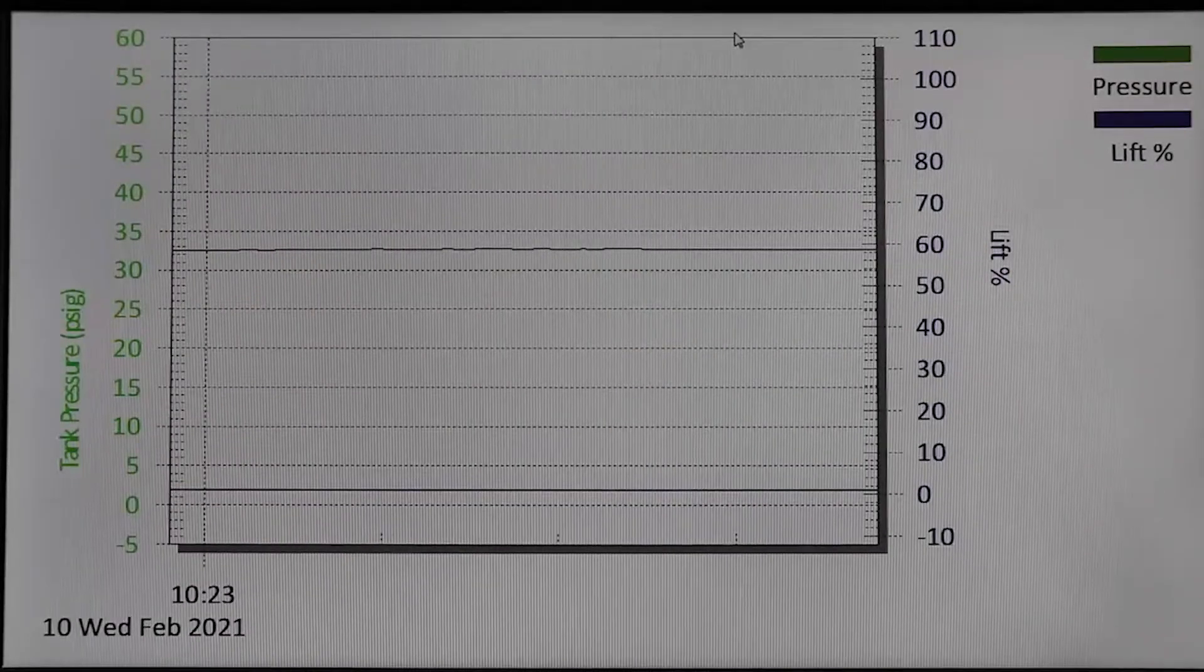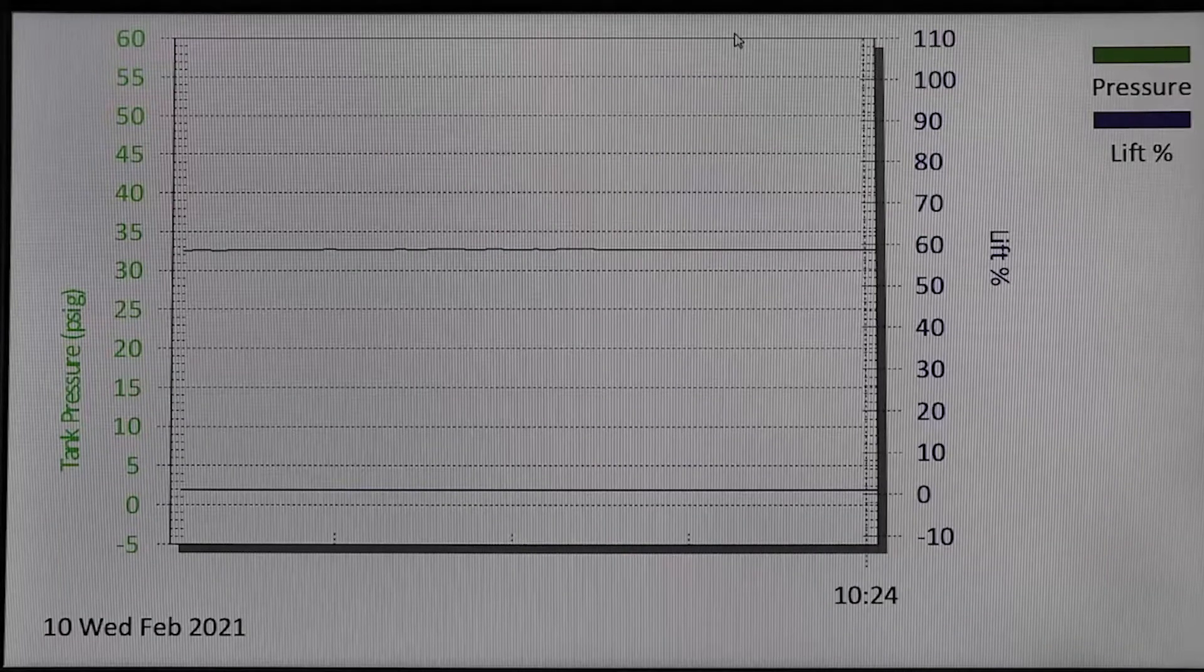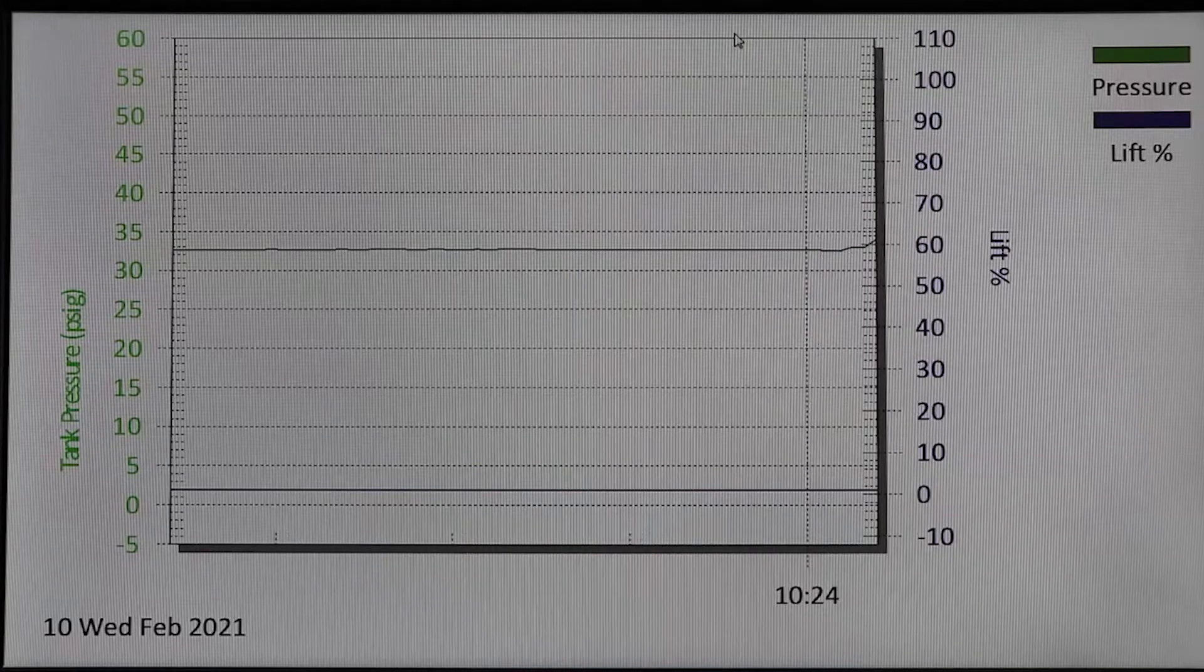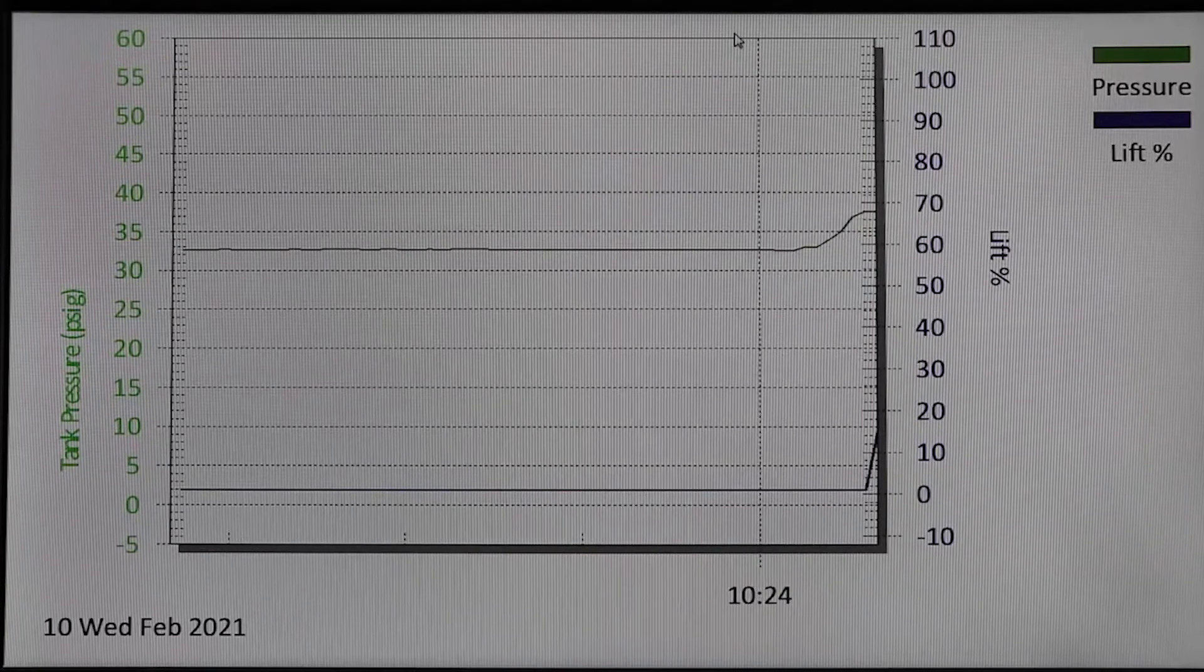The final example of a monitored event is a pressure relief valve with a position indicator. In this graph, you will see the system pressure shown in green and the valve's percentage of lift in blue on the vertical axis while time is on the horizontal axis.